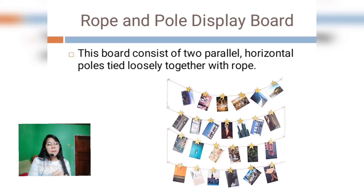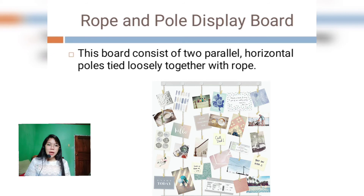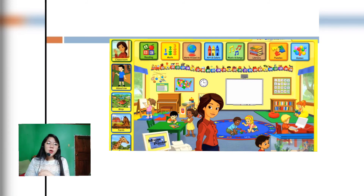The last example is the rope and pole display board. This board consists of two parallel horizontal poles tied loosely together with a rope, and visual aids such as posters can be pinned to the rope. This kind of display board is invaluable where there are few solid walls for displaying information. It has no solid backing and can be made quickly for teaching, training, and when working with a community. These are the examples of instructional materials for non-digital tools.